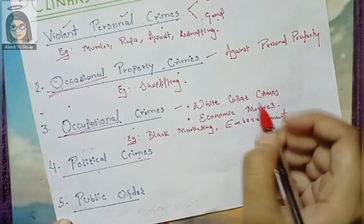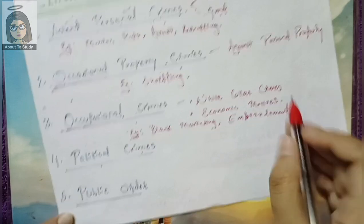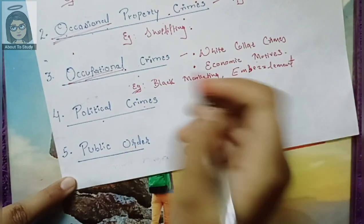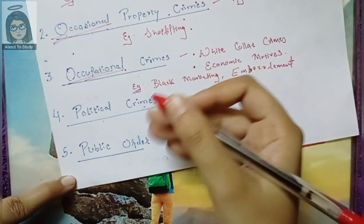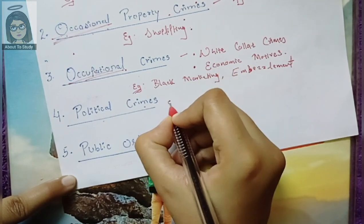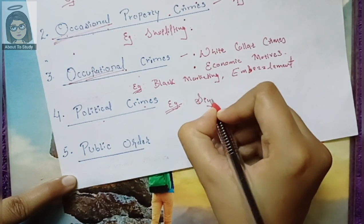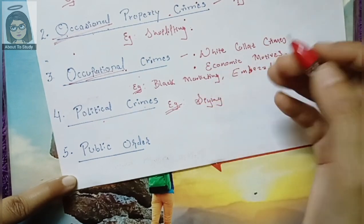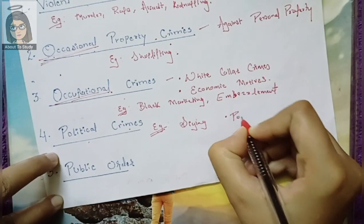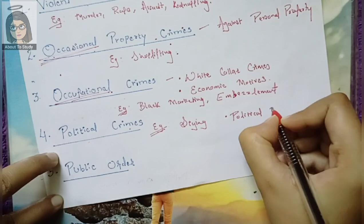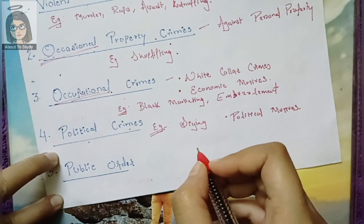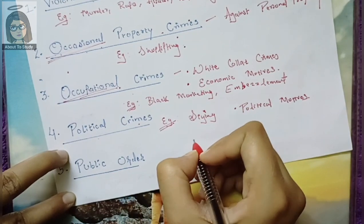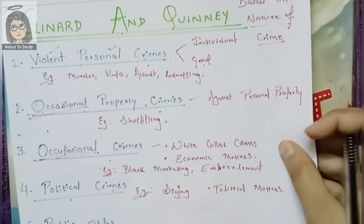Political crime involves politics. Crimes are committed for political interests or to seek a position of power. For example, spying on an opponent political party — espionage. These are committed with political motives. We can define almost every crime under this classification. This was the first classification.